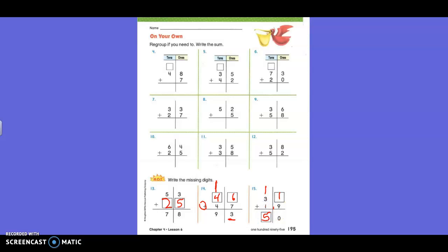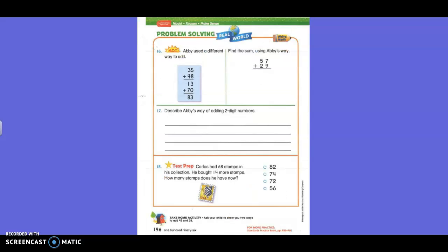Now I want us to go to the back part, problem solving. There's a writing one we're going to go over. We're going to go over sixteen and seventeen together, and then you will do number eighteen by yourself. Abby used a different way to add, so you get 35 plus 48 equals 13 plus 70 equals 83. Find the sum using Abby's way.